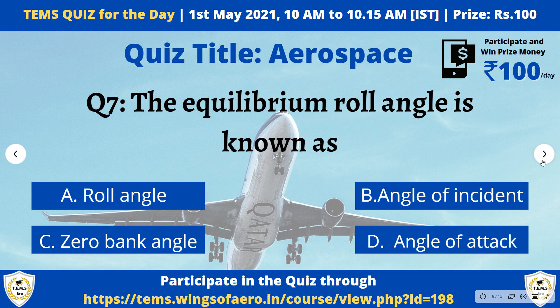Question 7: The equilibrium roll angle is known as — Option A: Roll angle. Option B: Angle of incidence. Option C: Zero bank angle. Option D: Angle of attack. This is also one of the easier questions. Try to participate in the quiz through temps.wingsofarro w.in.